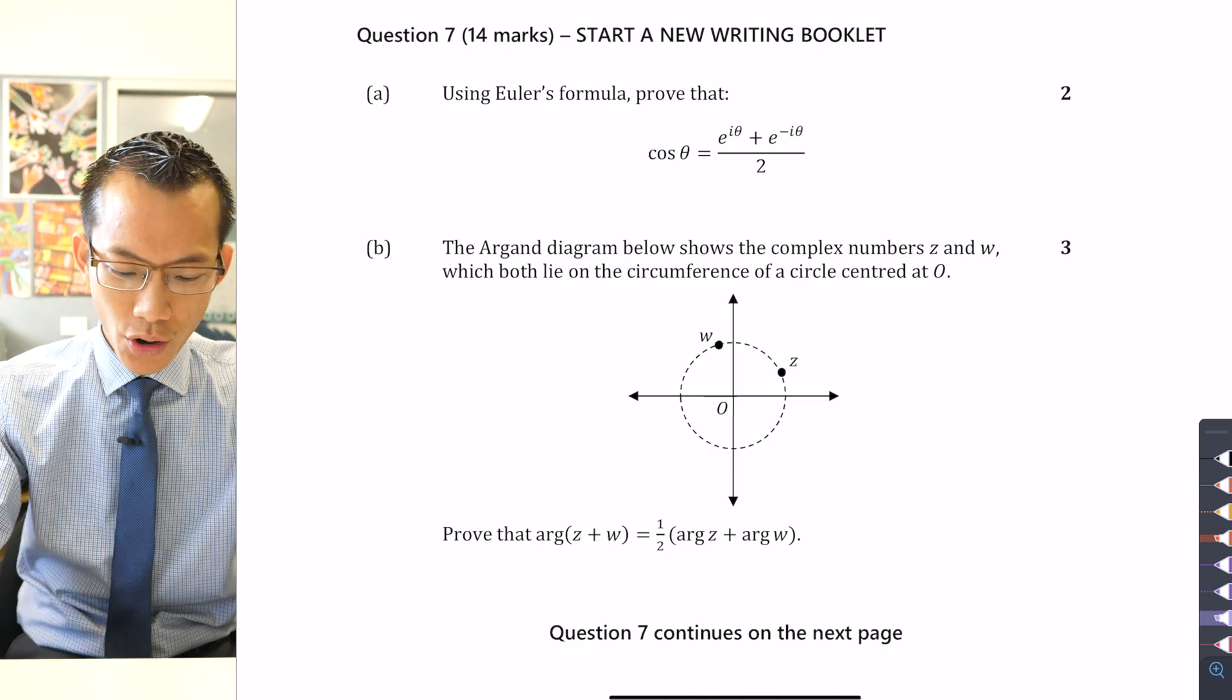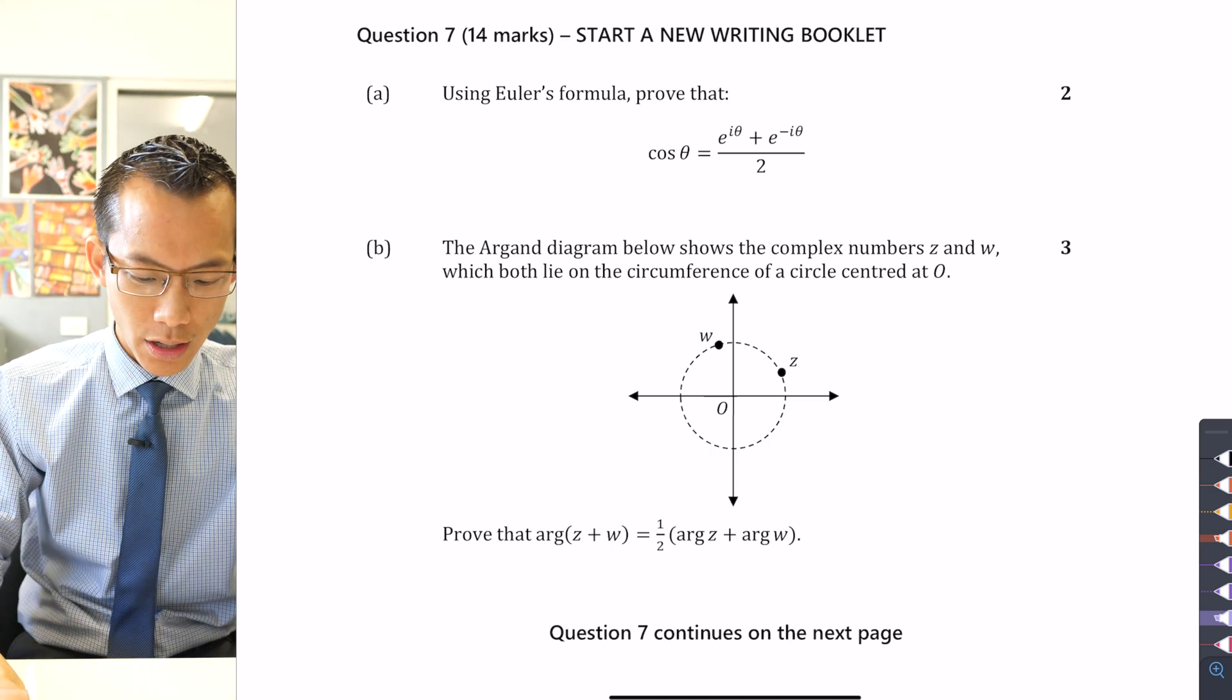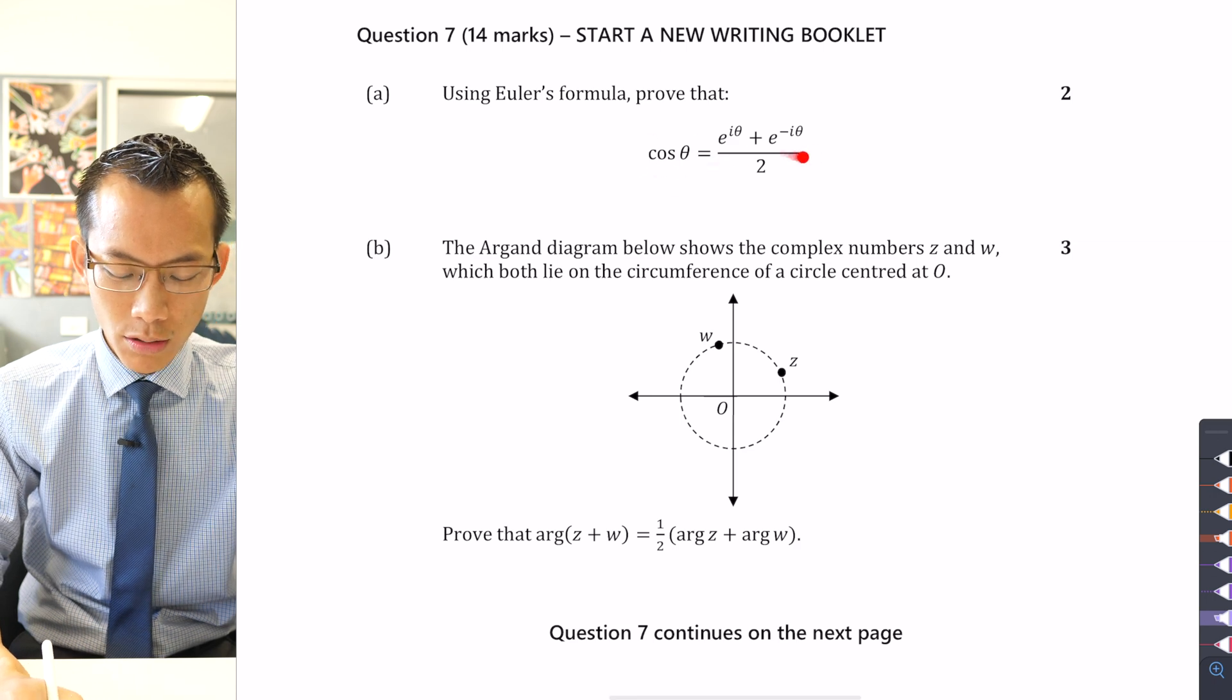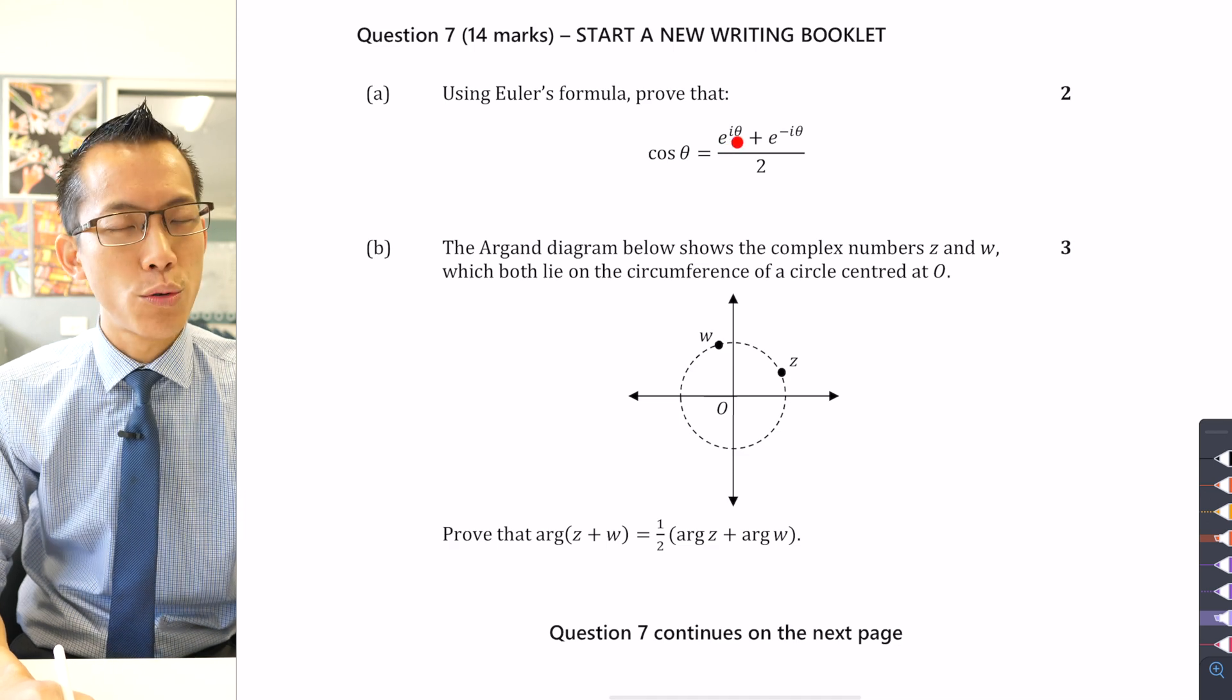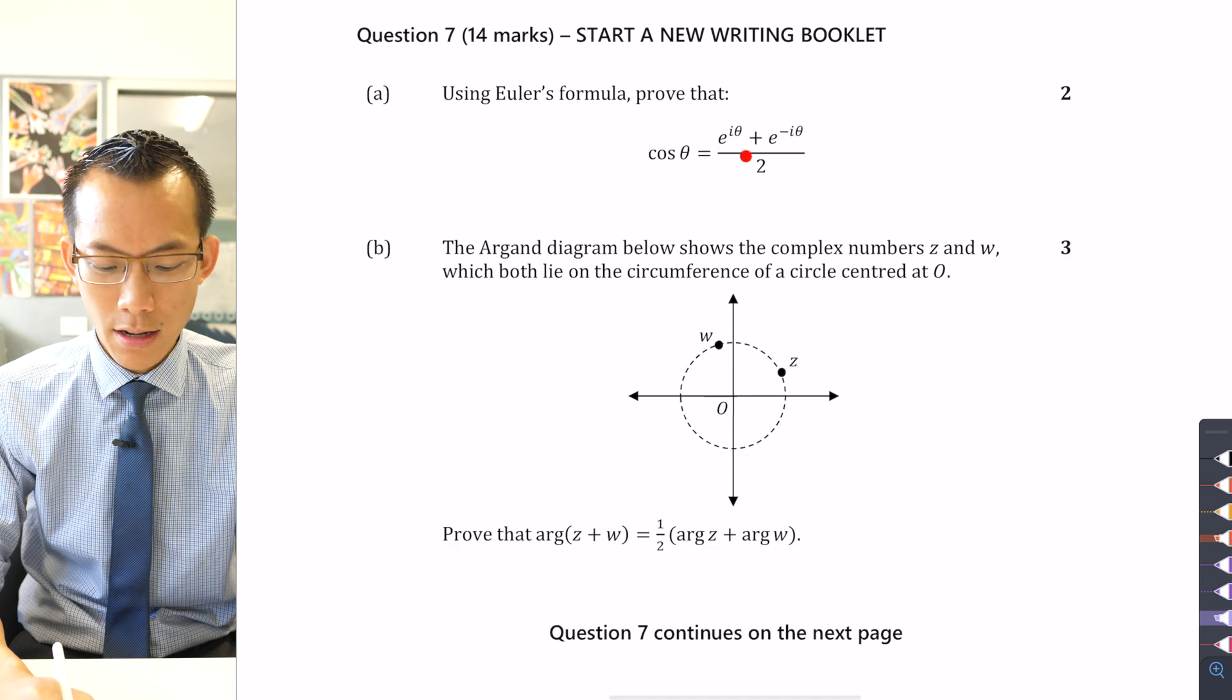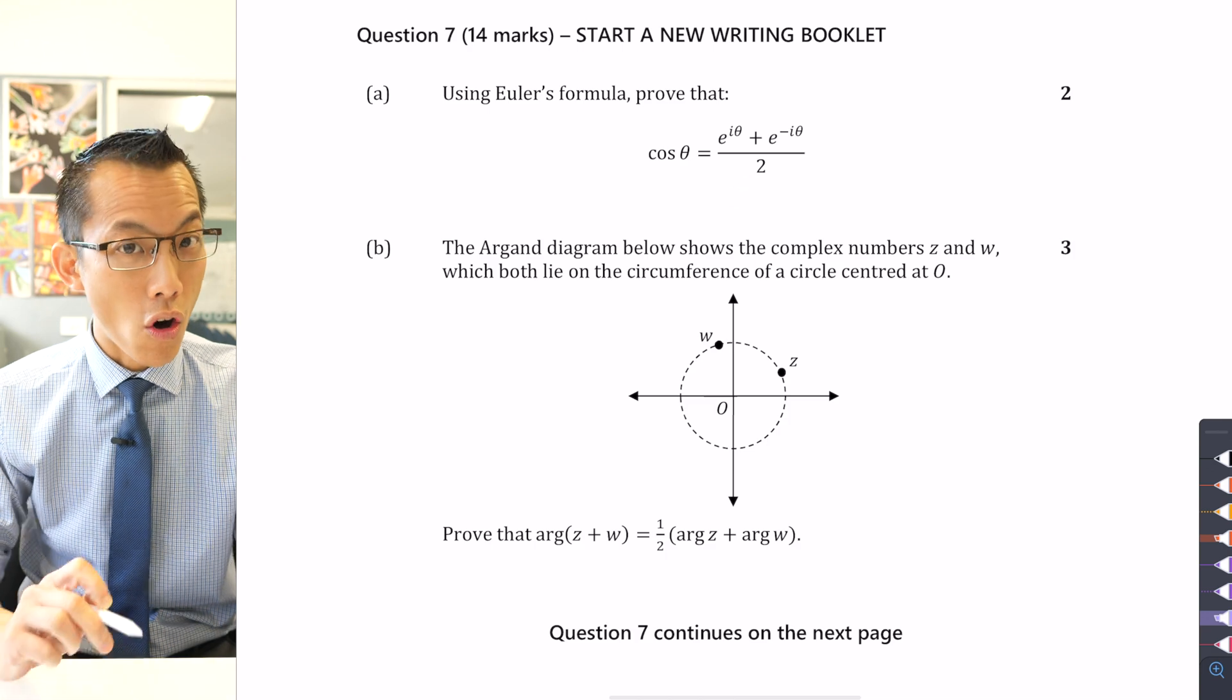Using Euler's formula, prove that cos θ, which you can see over here on the left-hand side, is equal to this unusual result on the right-hand side that involves the exponential form of a complex number, e^(iθ) + e^(-iθ) over 2.